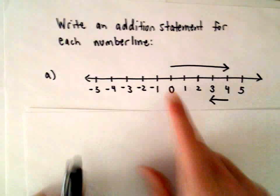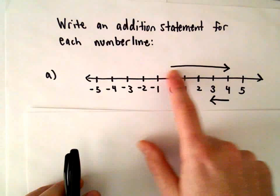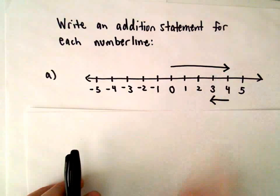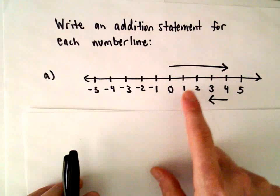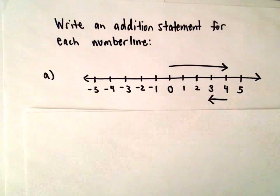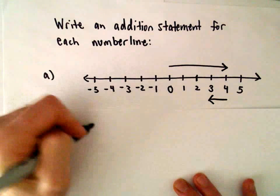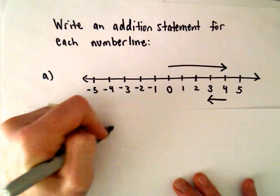So in part A here, we're starting at zero and then we're going four units to the right. We're going in the positive direction: one, two, three, four. So our addition statement for this would be positive four.